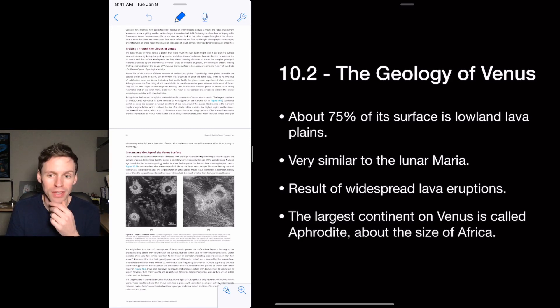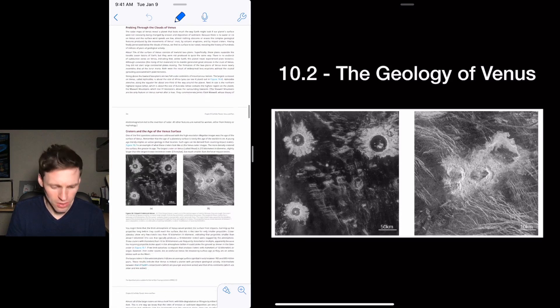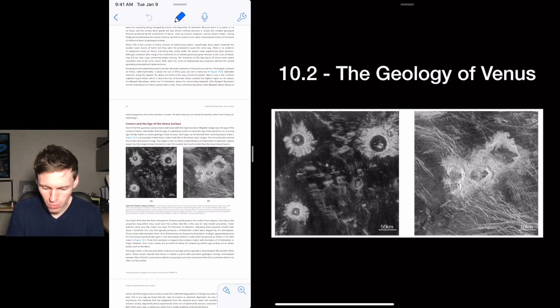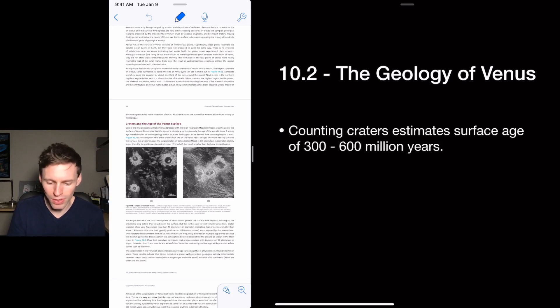The largest continent on Venus, it's broken up into continents just like Earth. And the largest one is Aphrodite, which is about the size of Africa. These are some cool pictures. The one on the right is named, this crater is named after Gertrude Stein. So these are just craters on the surface of Venus.